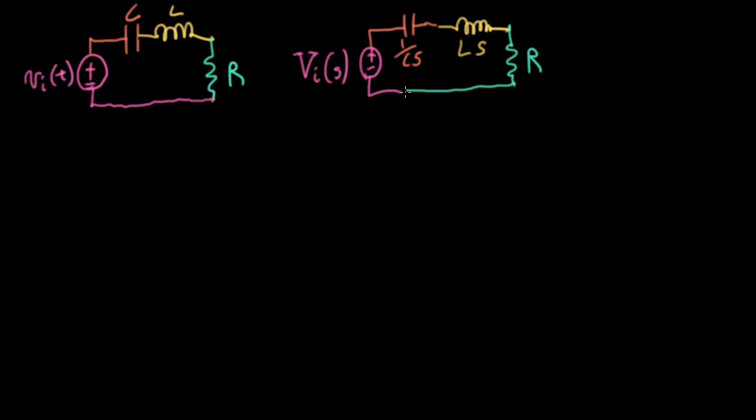What do I want to define as the output? Well, actually, I'm going to do two examples. So, right now this is going to be example 1. And in example 1, what we'll do is we'll define the current flowing through this loop here as my output. So I'm going to write this as I sub O S. Over here in the time domain, I could write that as little i sub O T, where the O stands for output.